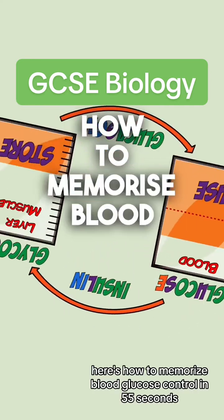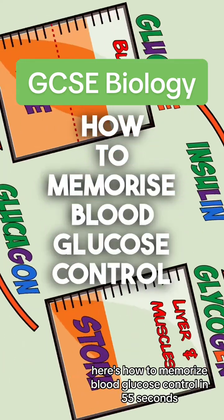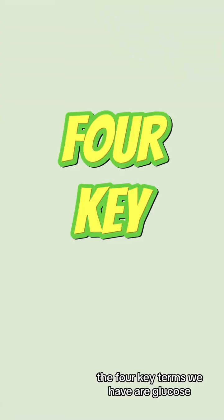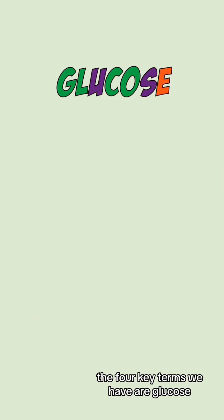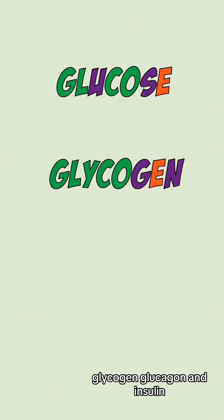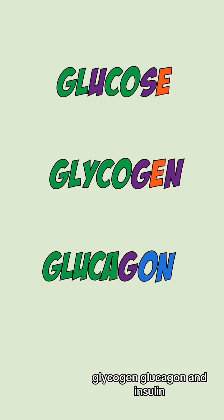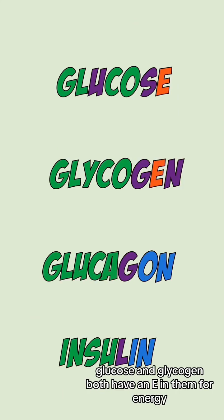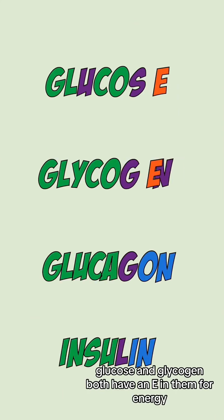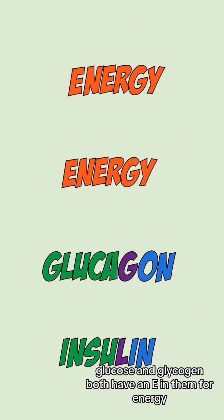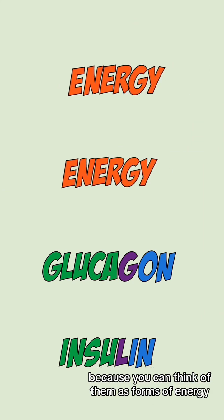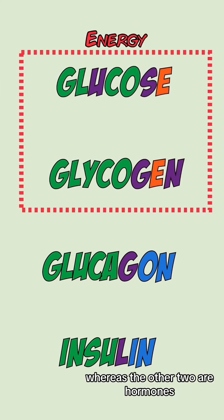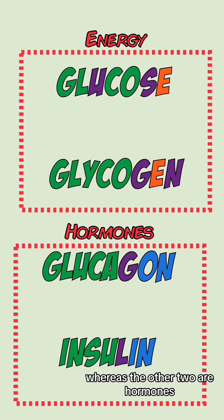Here's how to memorize blood glucose control in 55 seconds. The four key terms we have are glucose, glycogen, glucagon, and insulin. Glucose and glycogen both have an e in them for energy, because you can think of them as forms of energy, whereas the other two are hormones.